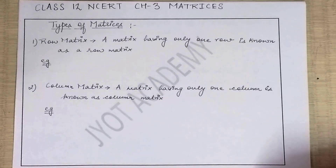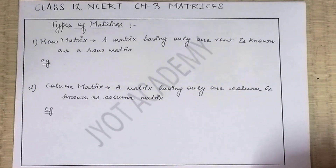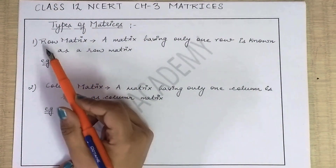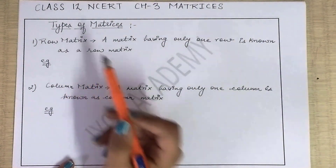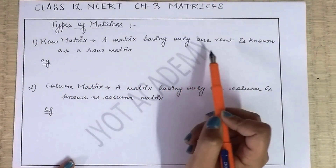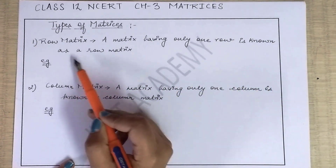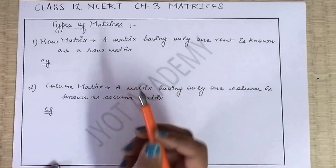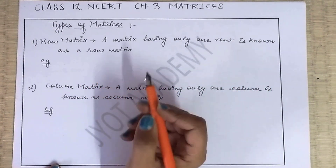Hello students, welcome back to my YouTube channel. Aaj hum dekhenge different types of matrices. So humara first hai row matrix — a row matrix having only one row is known as a row matrix.